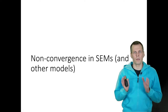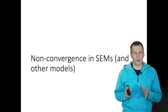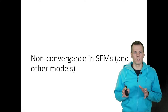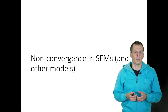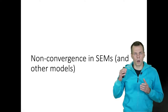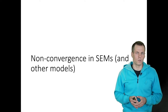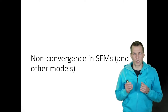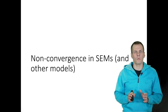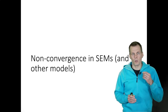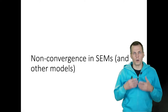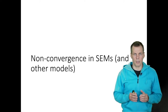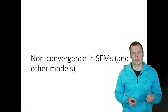Model non-convergence is a very common problem in empirical research using structural equation models or any other more advanced models. A convergence problem can be a technical problem or a model specification issue, but these are typically really hard to troubleshoot for a beginner. The reason they are hard to troubleshoot is that often researchers don't have a firm grasp on what exactly convergence is and in which ways it can fail.